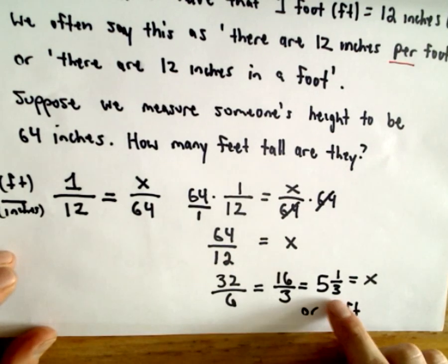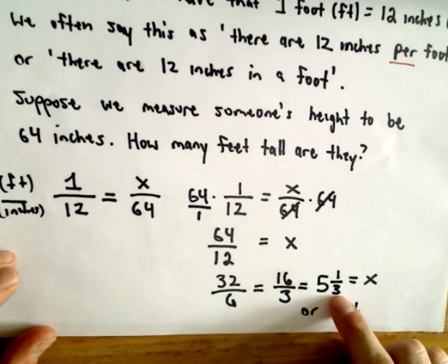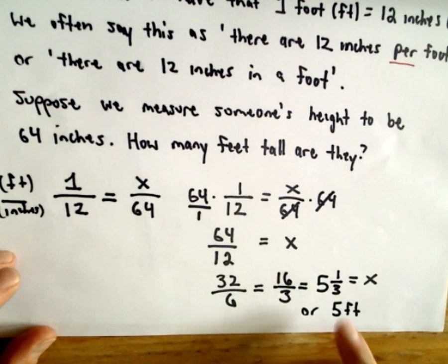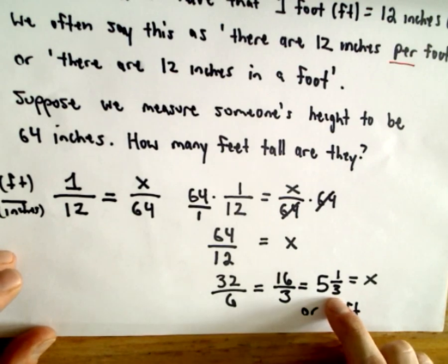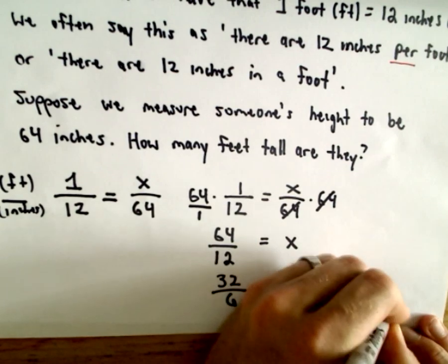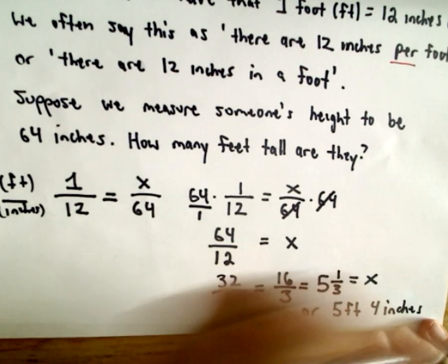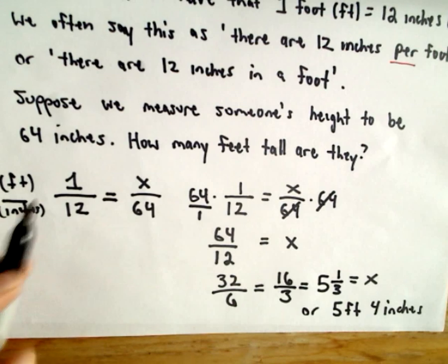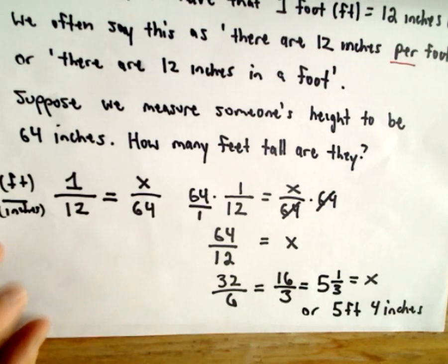Now, this is where we have to be a little careful. A third of a foot. That's not .333 feet. Well, excuse me, it is .333 feet, but it's not. We have to be careful when we convert it to inches. So one-third, well, what's one-third of a foot? That would be four inches. So the person who we measured to be sixty-four inches tall, that person is five feet and four inches.